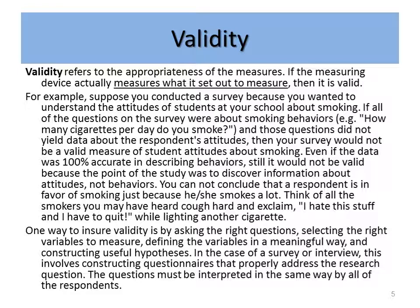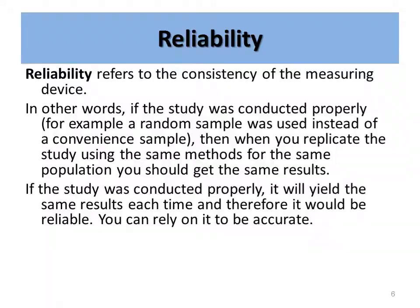You cannot conclude that a respondent is in favor of smoking just because he or she smokes a lot. Think of all the smokers you may know who cough hard and exclaim, 'I hate this stuff, I have to quit,' while lighting another cigarette. One way to ensure validity is by asking the right questions, selecting the right variables to measure, defining the variables in a meaningful way, and constructing useful hypotheses. In the case of a survey or interview, this involves constructing questionnaires that properly address the research question, and the questions must be interpreted the same way by all of the respondents.